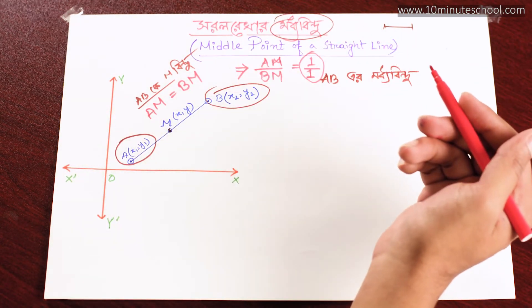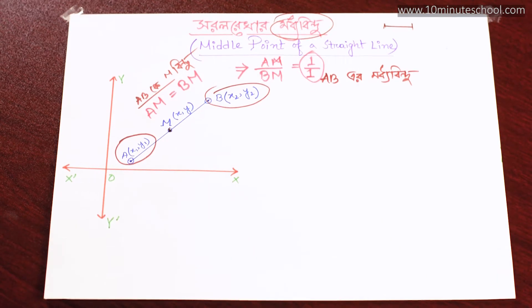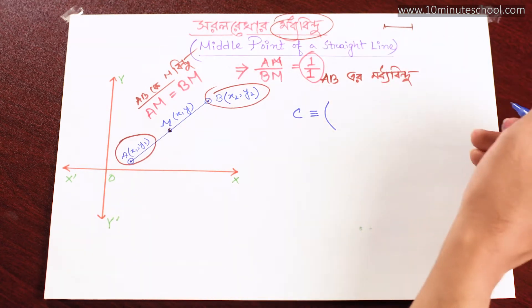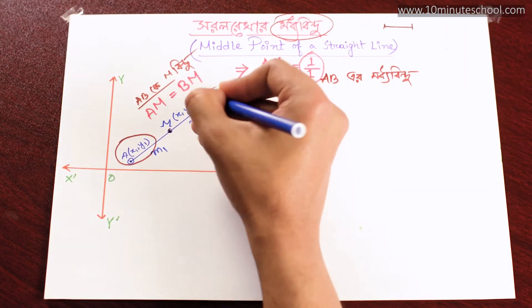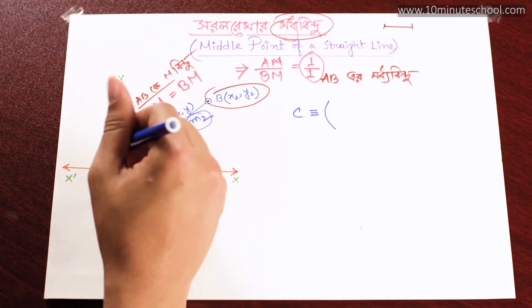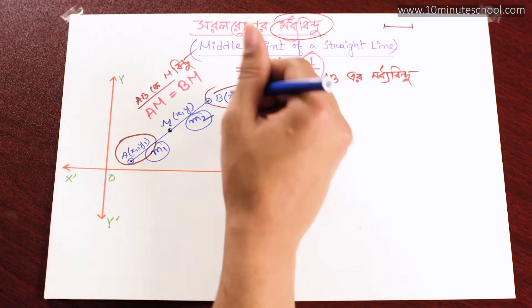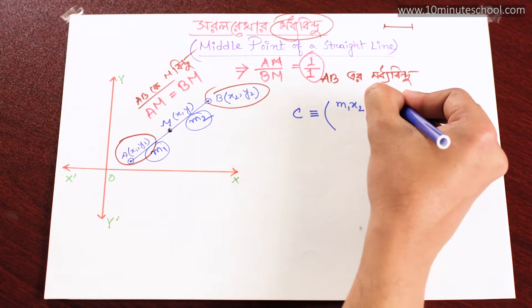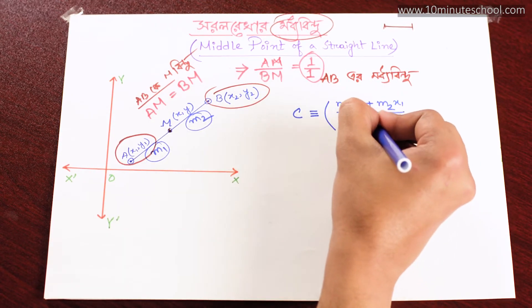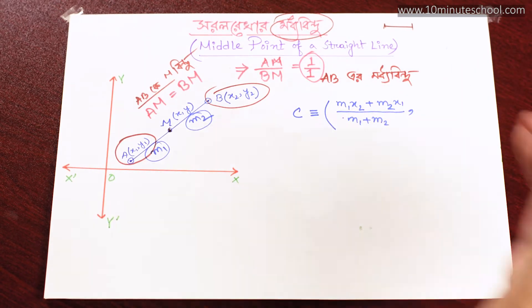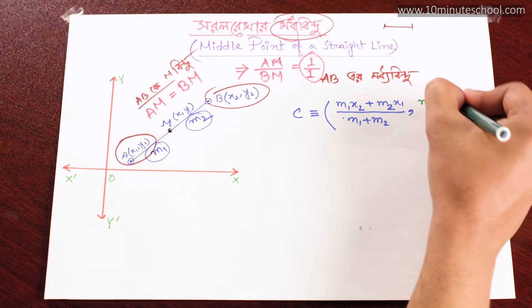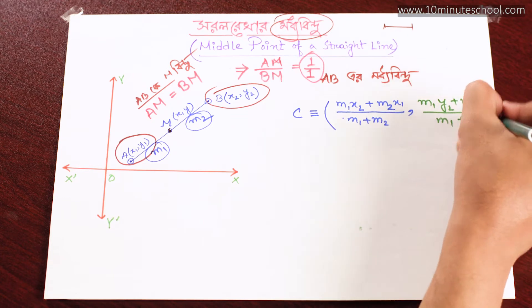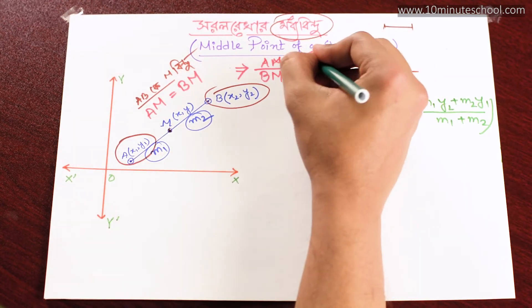তো হলে কী দেখা গেল? একটু হলো — কলে লিখ, কলে তোমরা দেখতে পাবে। দুমিদো নিনা করা সূত্র পাবো। চালো দেখি — নিকোমা এমান y2 plus m2, y1 plus m2, divided by m1 plus m2.